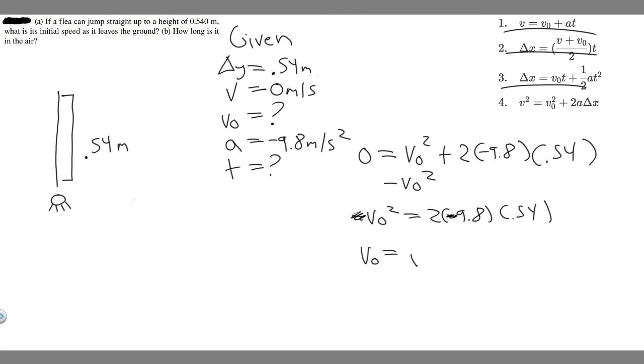So V sub 0 is going to equal the square root of 2 times 9.8 times 0.54. So if you go ahead and do this, V sub 0, you have the square root of 2 times 9.8 times 0.54, you're going to get 3.2533 and so on.